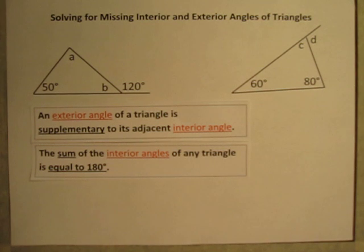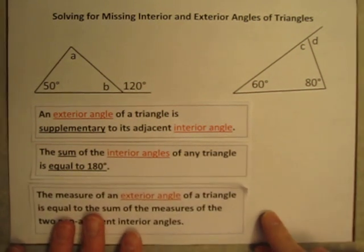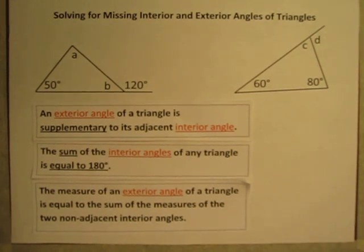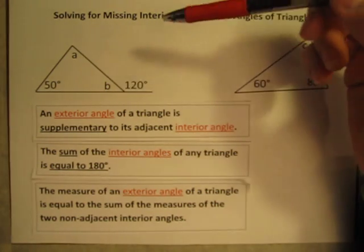And I know that 50 degrees plus angle A plus angle B is equal to 180 degrees. The final thing we need to know is this one here, that the measure of an exterior angle of a triangle is equal to the sum of the measures of the two non-adjacent interior angles.